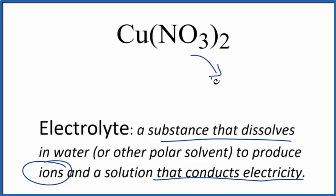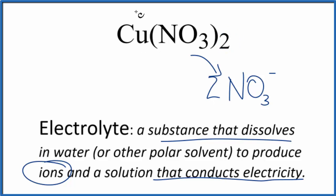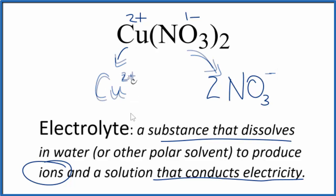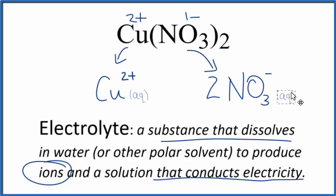We'll get the nitrate ion, that's NO₃, which has a 1- ionic charge, and we get 2 of those. For copper, this is a transition metal so we don't automatically know the charge, but since the nitrate is 1- and we have two of them, the copper must be 2+. So we get the copper 2+ ion as well. These ions are dissolved in water, so we put AQ — aqueous — after them.